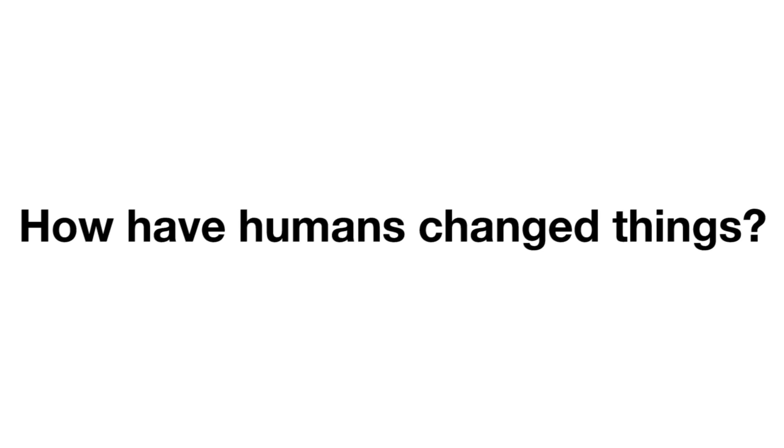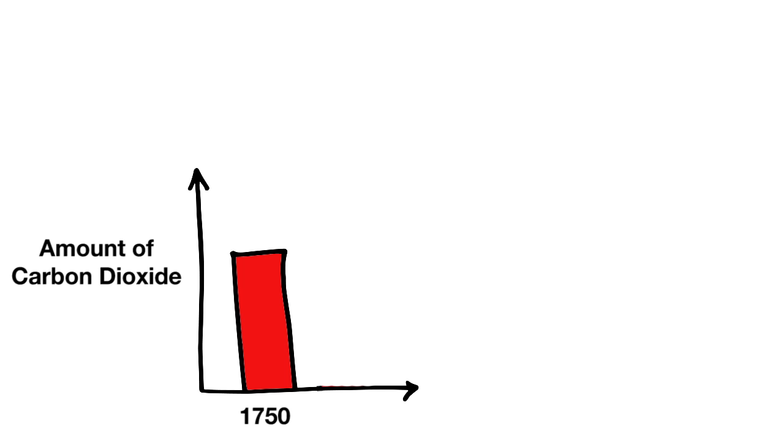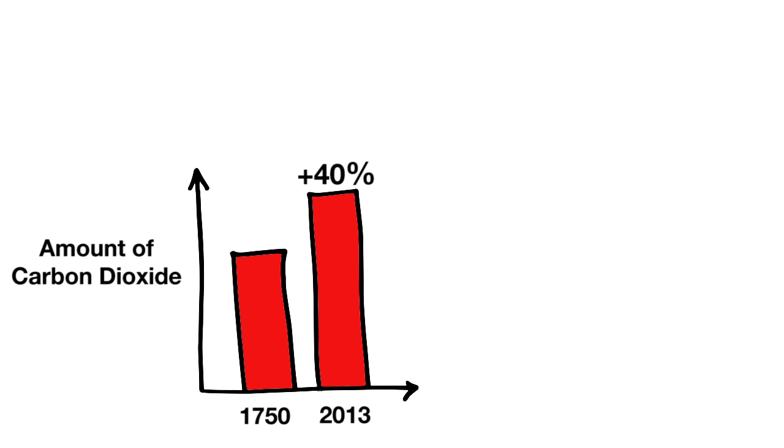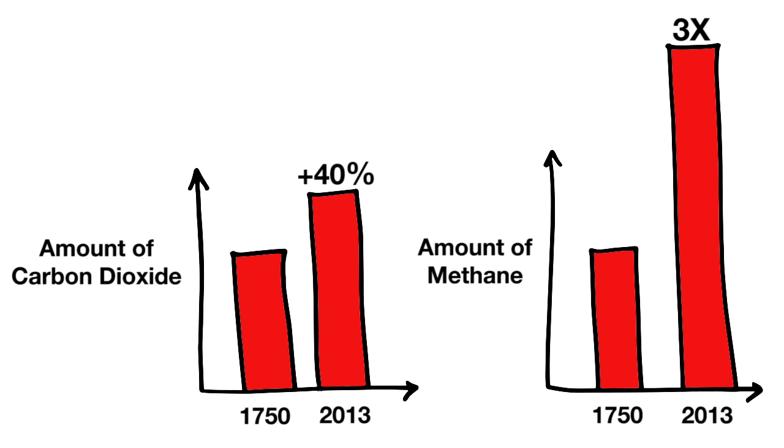So, how have humans changed things? Since the dawn of the industrial age, around the year 1750, atmospheric carbon dioxide has increased by 40%, and methane has almost tripled.